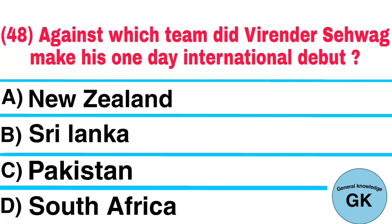Question number 48. Against which team did Virendra Sehwag make his one-day international debut? A. New Zealand, B. Sri Lanka, C. Pakistan, D. South Africa. Answer: Pakistan.